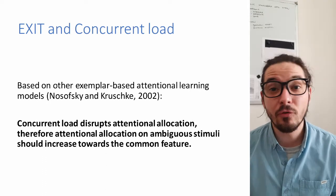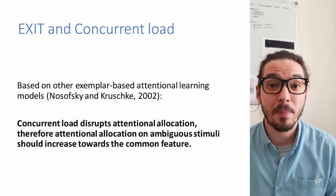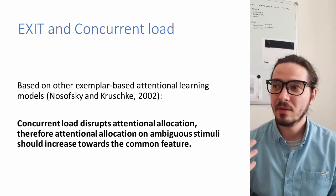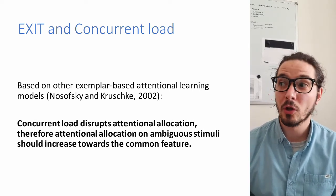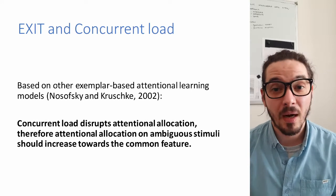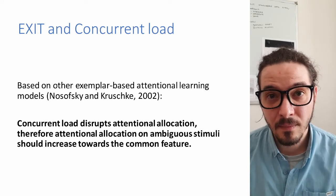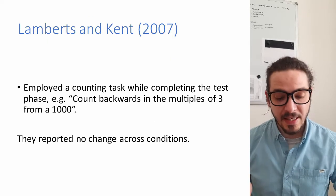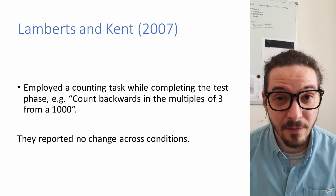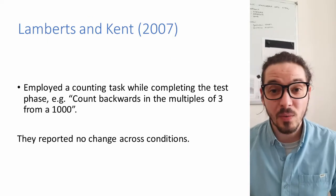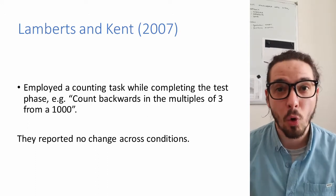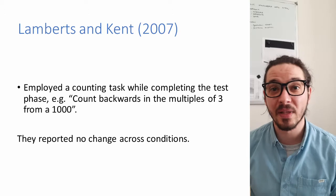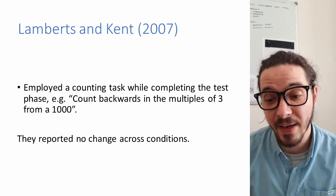This is interesting because it is paradoxical. What EXIT says here is that under concurrent load you will become more rational. Fortunately there is an empirical side to this, and previous work tried to explore the relationship between concurrent load and the systematic rare bias in the inverse base rate effect.